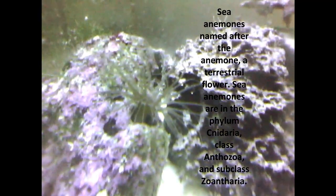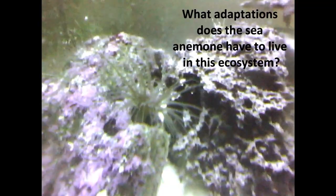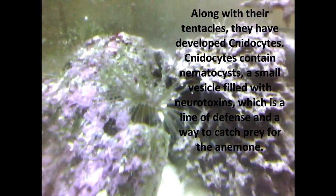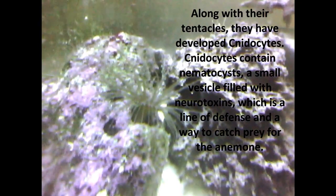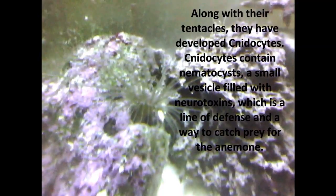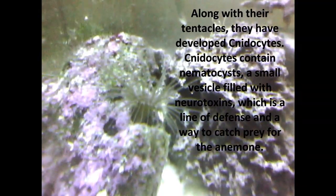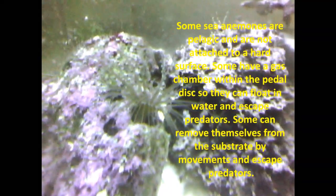What adaptations does the sea anemone have to live in this ecosystem? Along with their tentacles, they have developed cnidocytes. Cnidocytes contain nematocysts, a small vesicle filled with neurotoxins, which serve as a line of defense and a way to catch prey for the anemone.